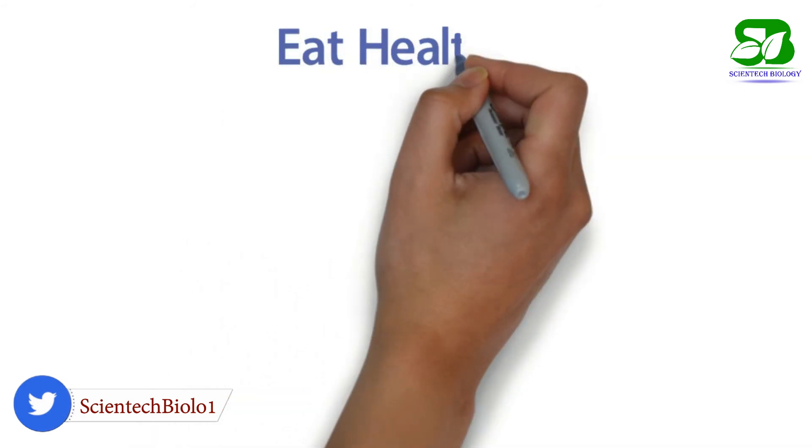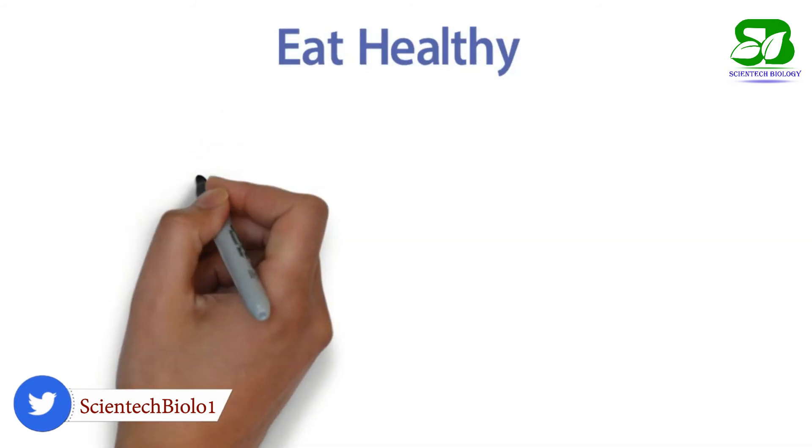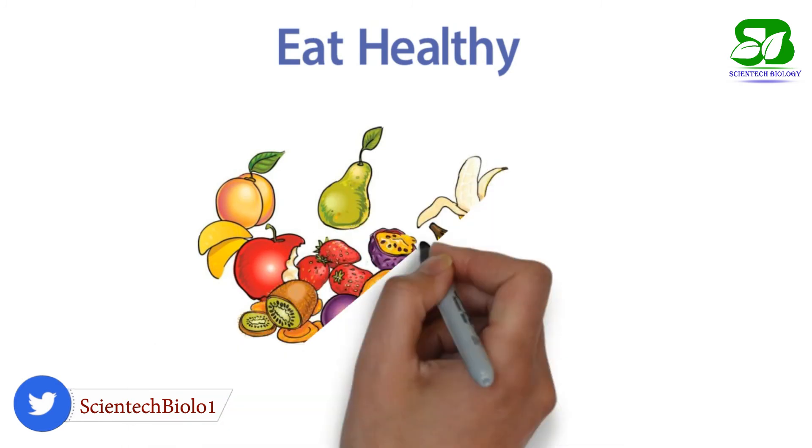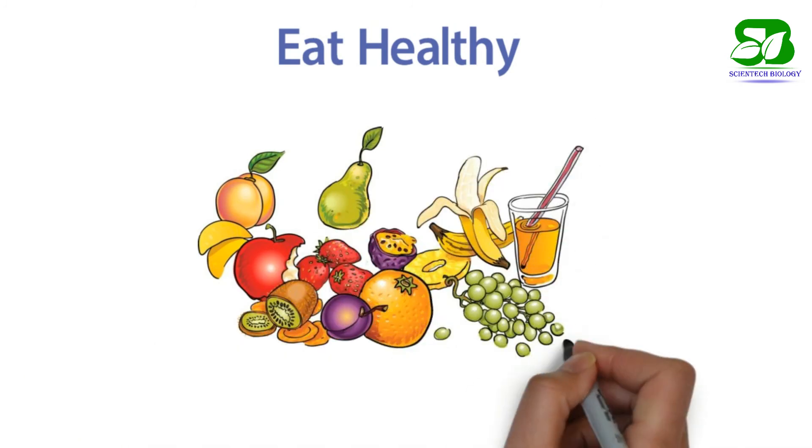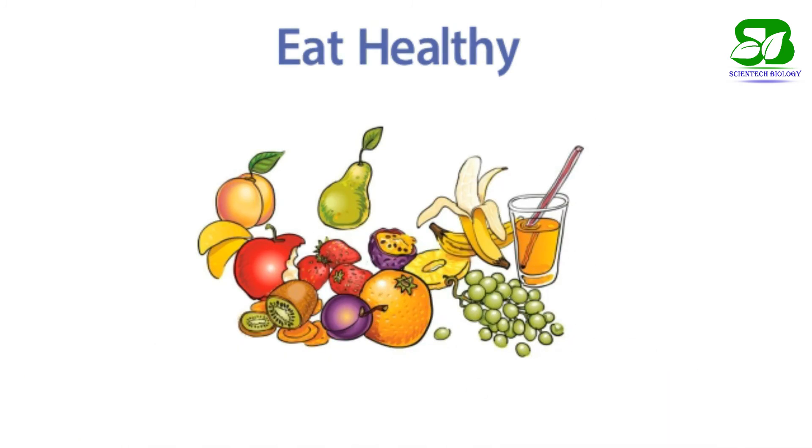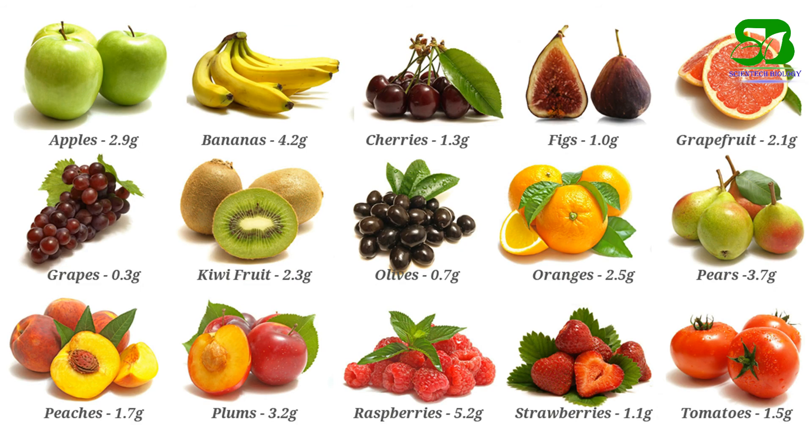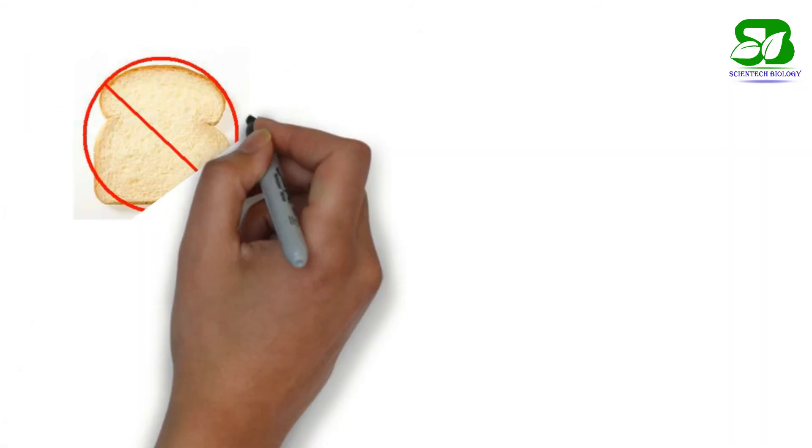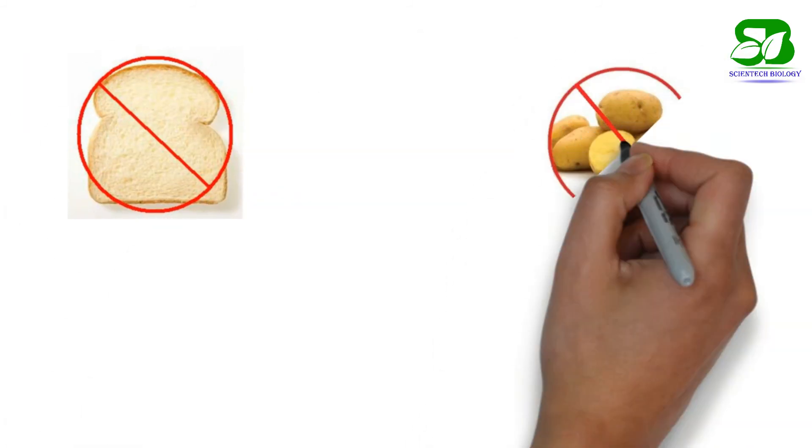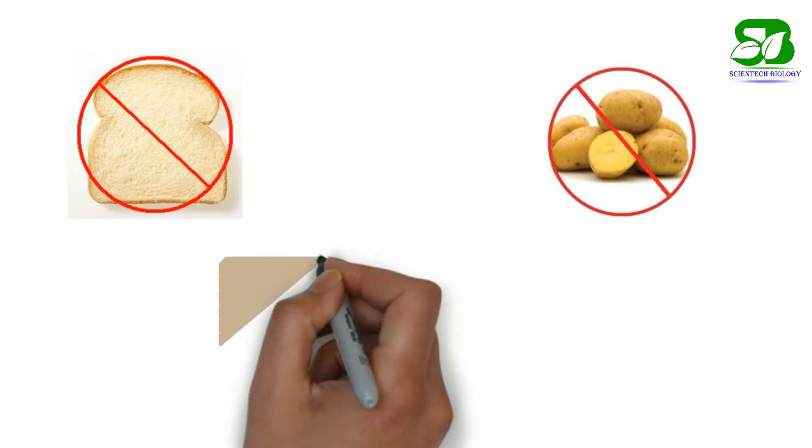Eat healthy. You are what you eat after all. If you eat healthy, your mind will be healthy too. Aim to eat colorful fruits, vegetables, whole grains, nuts and good fats. Avoid white breads, potatoes, sugar and sugary drinks.